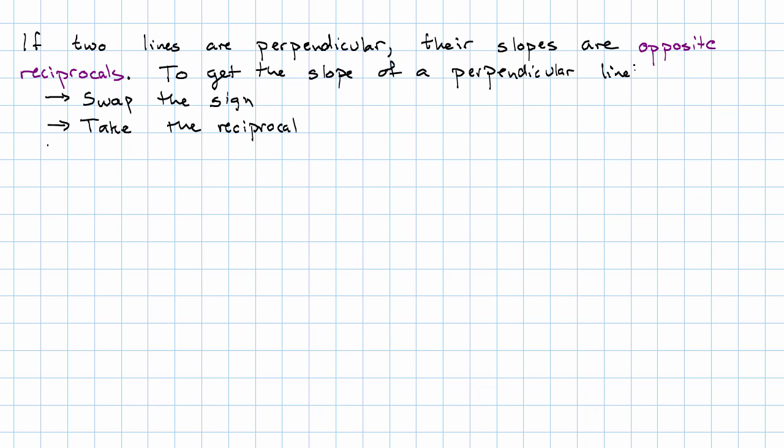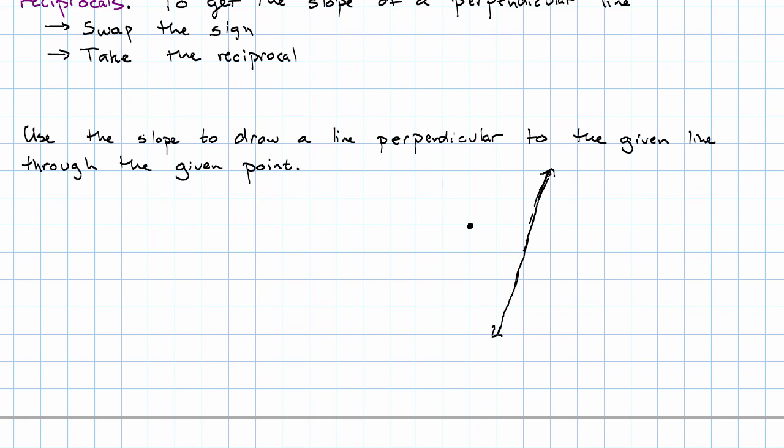Here's an example. I want to use the slope to draw a line perpendicular to the given line through the given point. Here's a line and here's a point. I want to draw a line perpendicular to this line. One way I can do it is, well, first I figure out the slope.